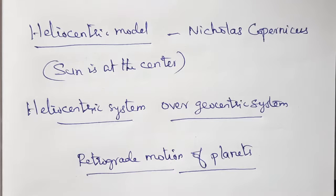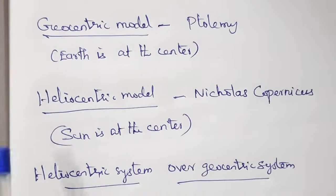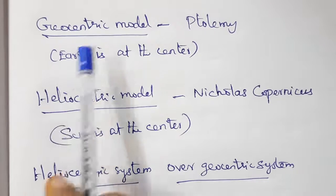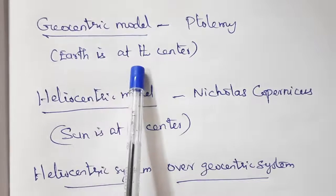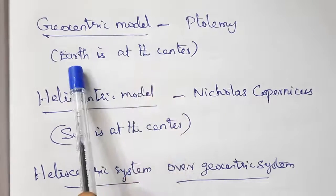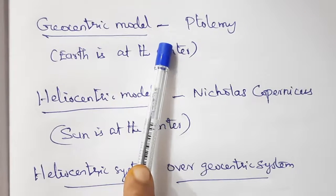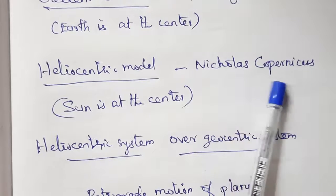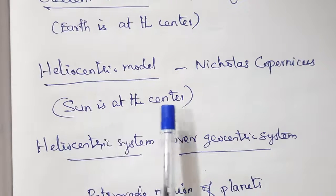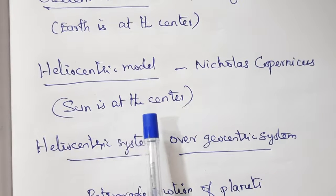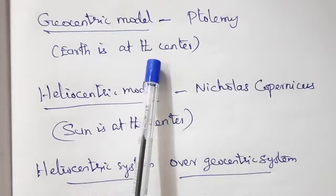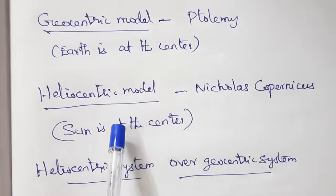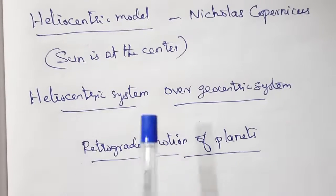You have heard of two models: the geocentric model and the heliocentric model. The geocentric model was proposed by Ptolemy — Earth is at the center, and all other planets and even the Sun revolve around the Earth. The heliocentric model was proposed by Nicholas Copernicus — the Sun is at the center, and all other planets, including Earth, revolve around the Sun. It is important to analyze the shortcomings of the geocentric model compared to the heliocentric system.